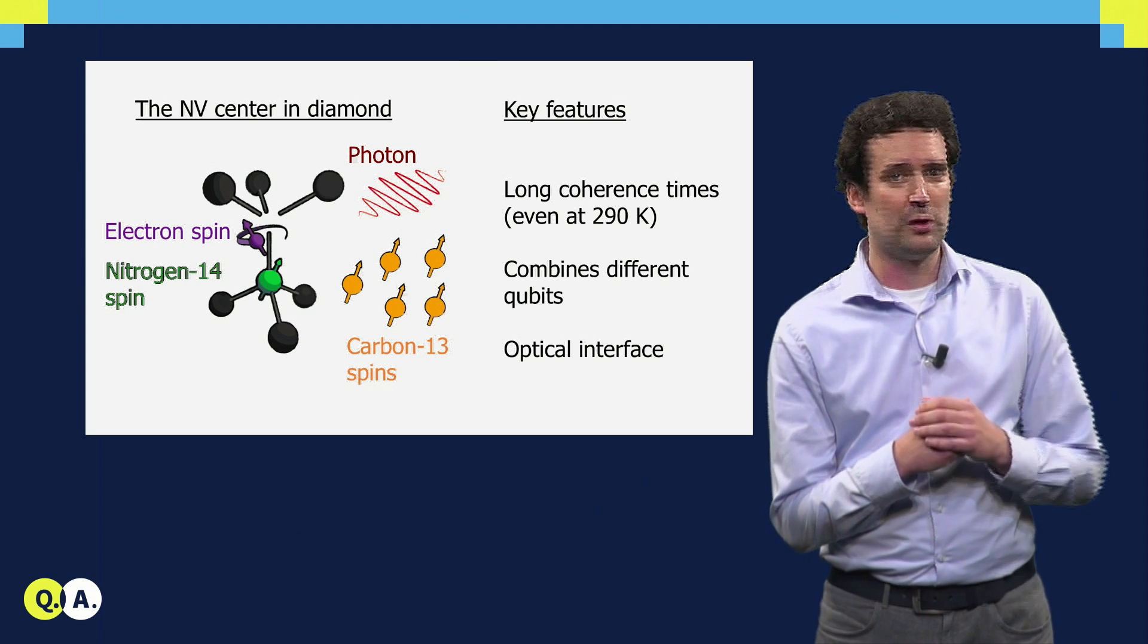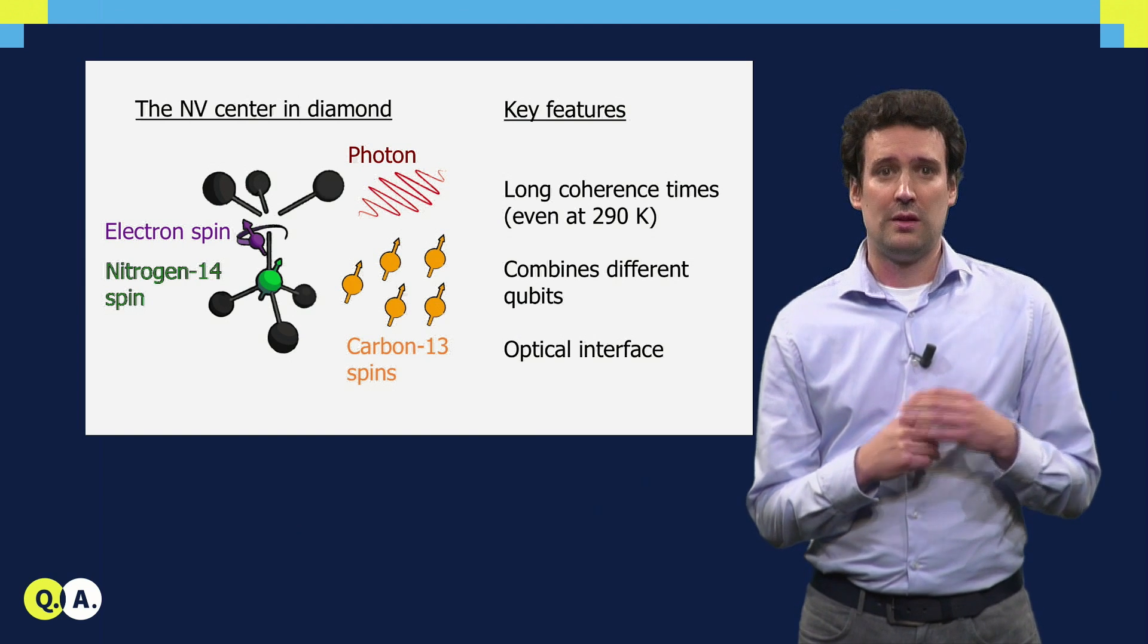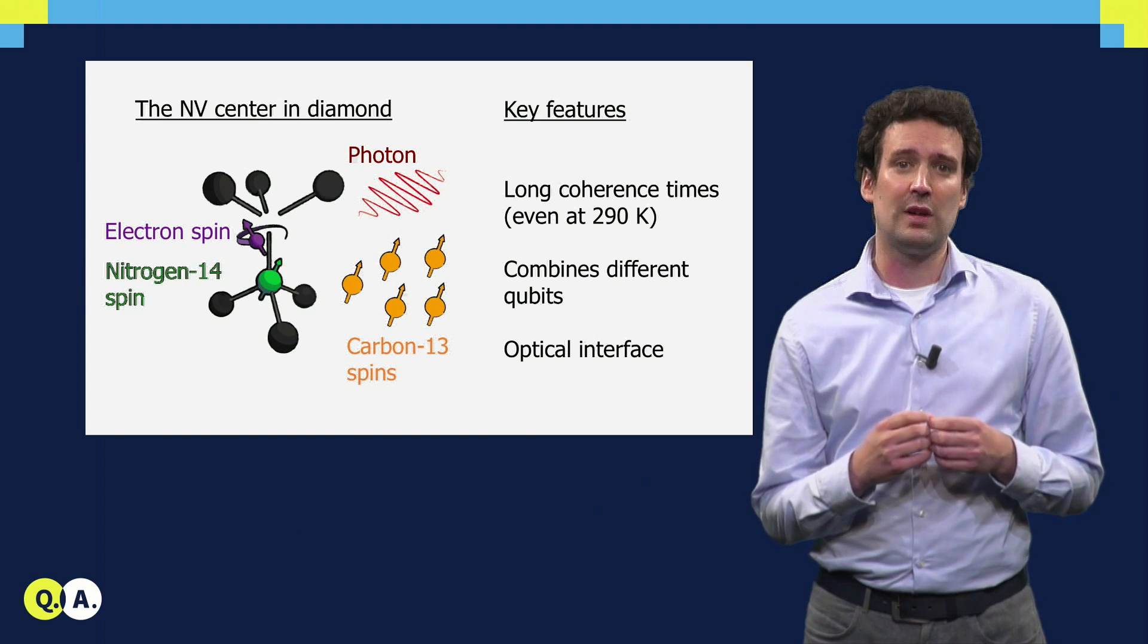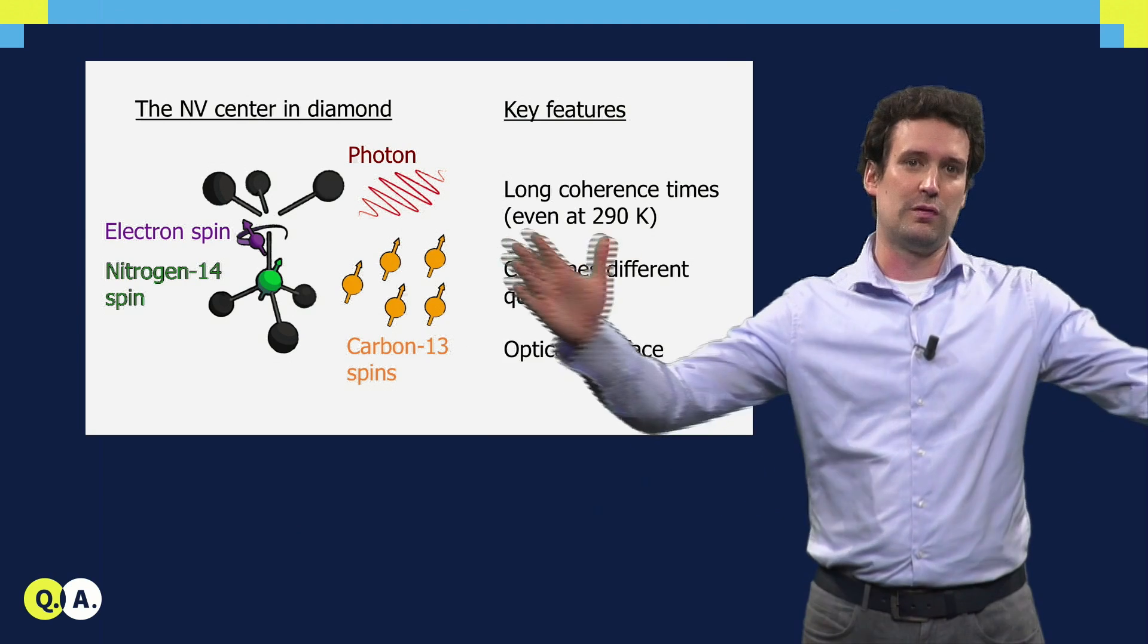Additionally, the electron spin also interacts with photons, elementary particles of light. This makes it possible to send quantum states far away and to connect and entangle NV centers over a distance.